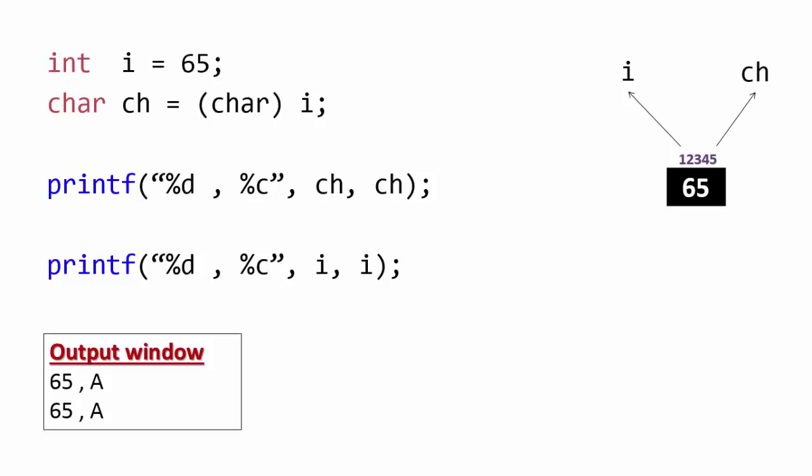Here i and ch are called as variable because their value can vary. That is in a program we can assign a new value and the variable can then point to a new memory location.